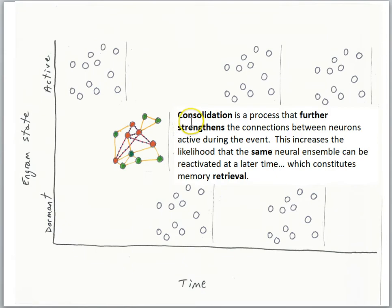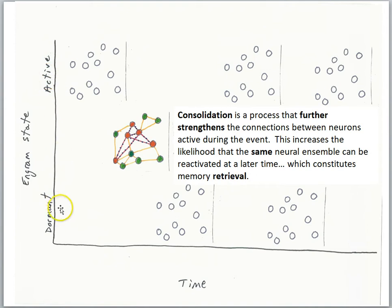These cells will strengthen their connections so that synaptic plasticity will link them into an ensemble — a population that represents the memory for the event. Consolidation, from this perspective, is a process that further strengthens the connections between neurons active during the event. This increases the likelihood that the same neural ensemble can be reactivated at a later time, which constitutes memory retrieval.